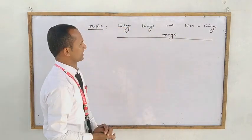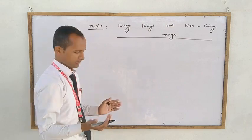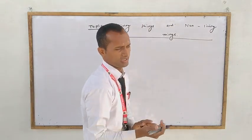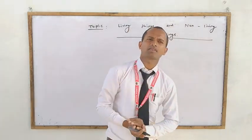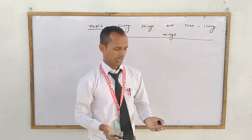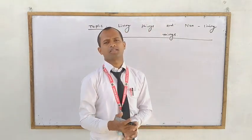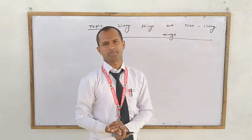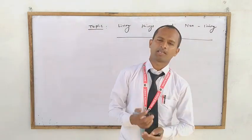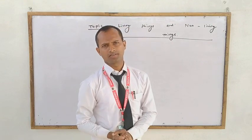Before starting with this topic, firstly try to understand about what are things. Things means all objects — all that which are present on our earth or in the world — which have fixed mass and occupy space. Having fixed mass and occupying space are the properties that define things.